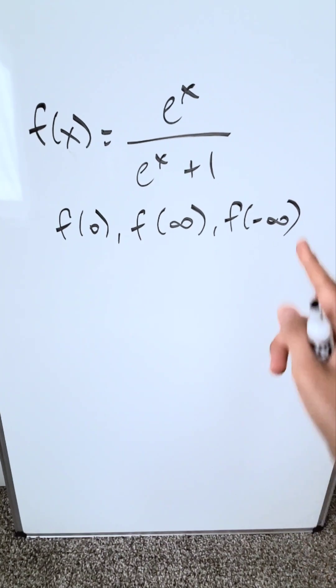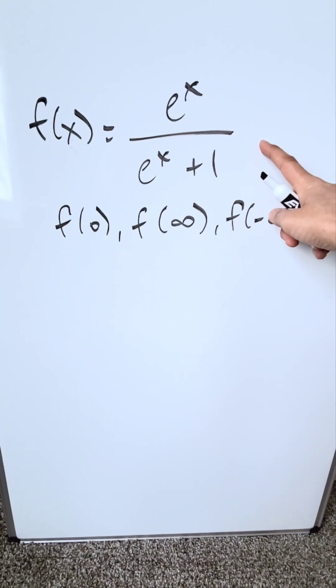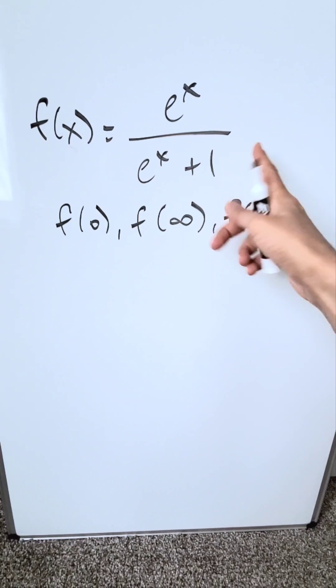We are looking here at a function f of x equal to what you see here: e to the x divided by e to the x plus 1, a rational function.